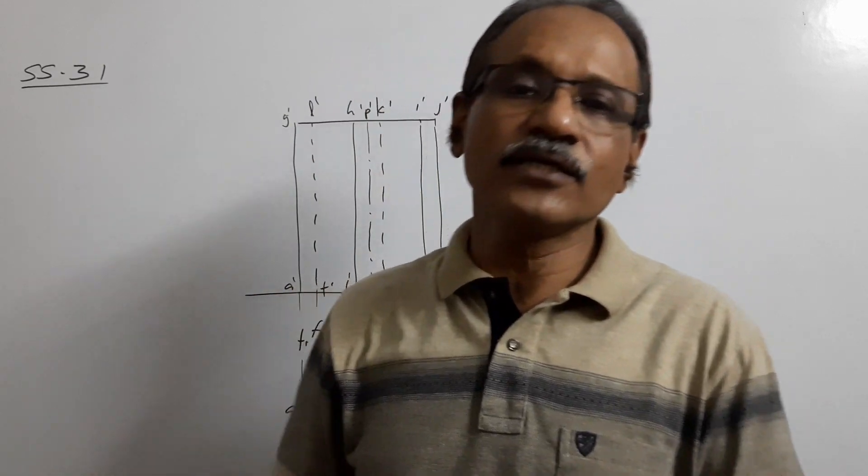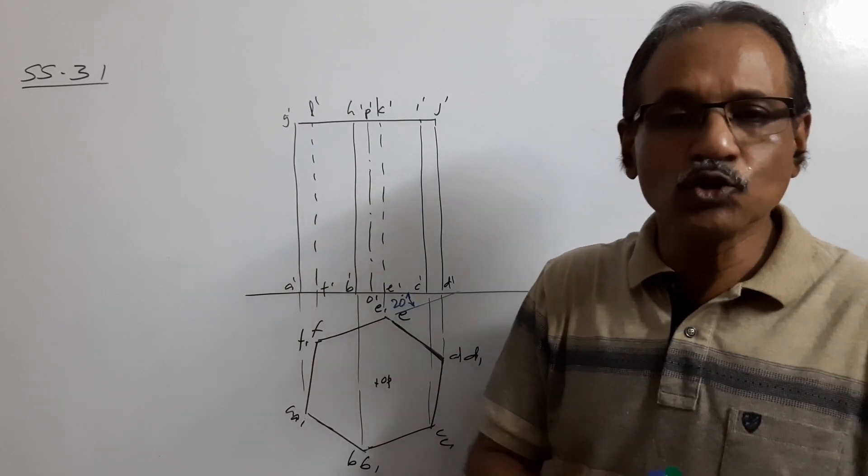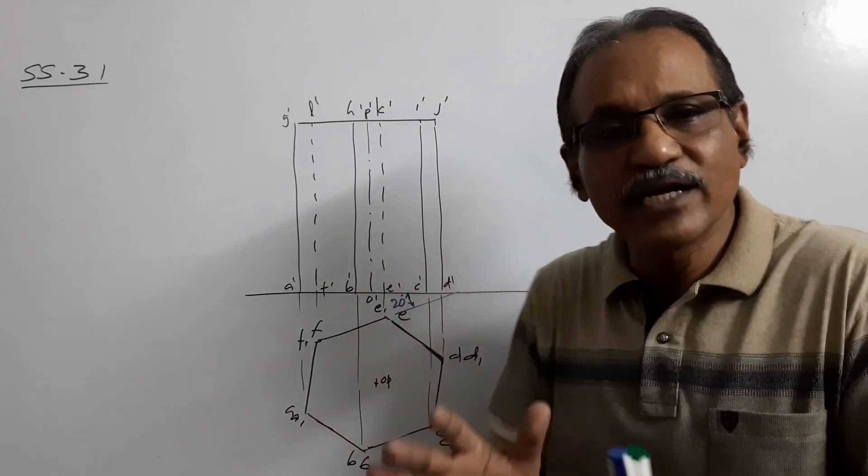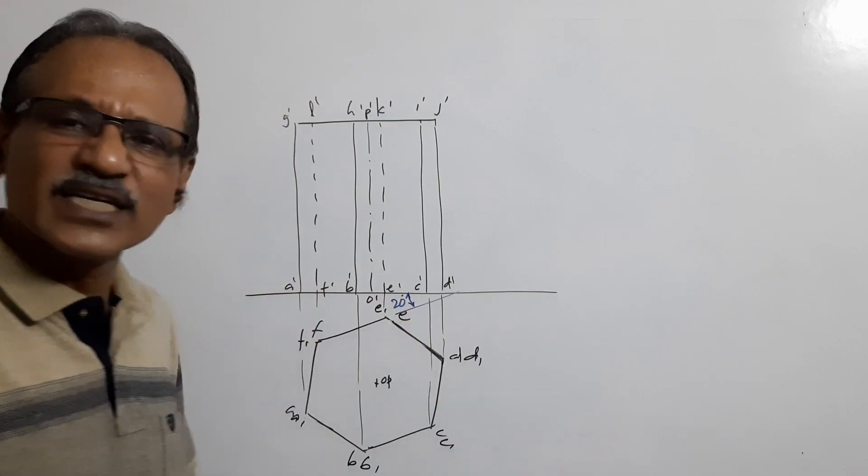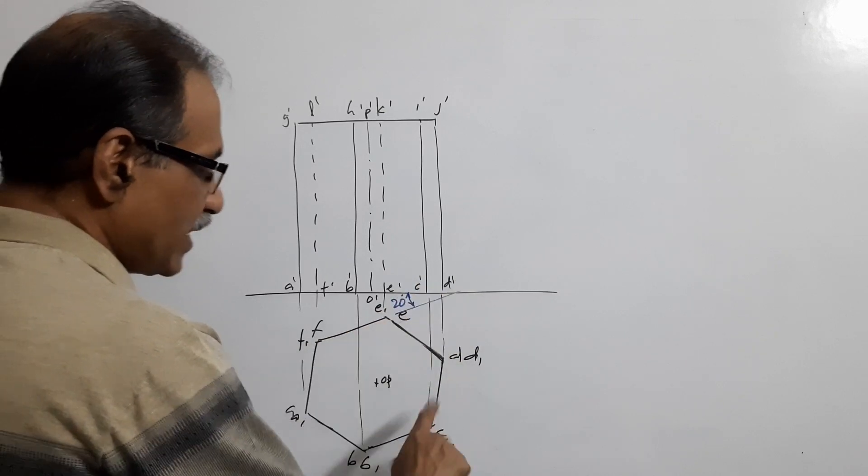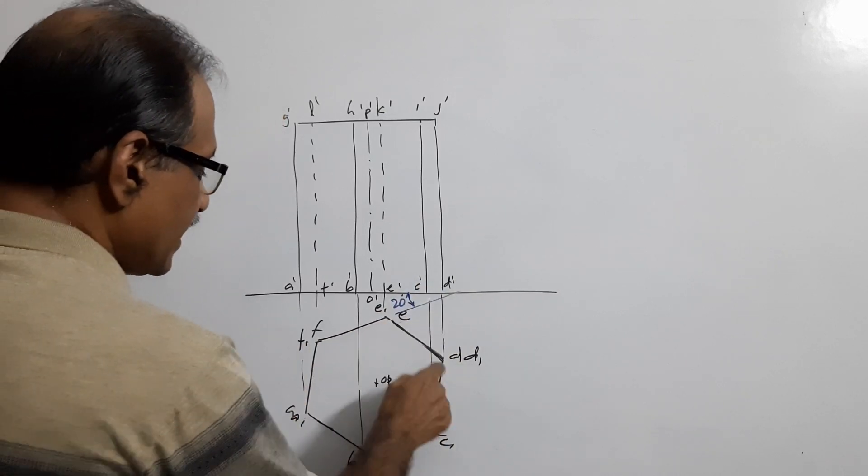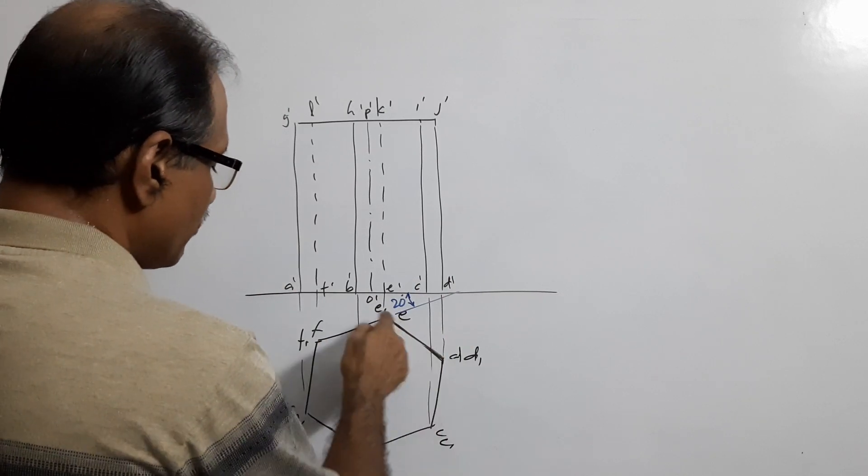You are asked to draw a sectional plan, section elevation, and true shape. For the time being, assume the prism is made of solid material. Draw the plan with one side 20 degrees to XY line. Complete the hexagon ABCDEF on the bottom.